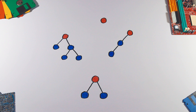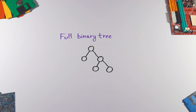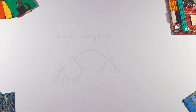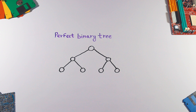We have a few common types of binary trees. A full binary tree is a tree where every node has either zero or two children. A complete binary tree is a tree where all levels are completely filled except possibly the last level, and the last level has all nodes as far left as possible.